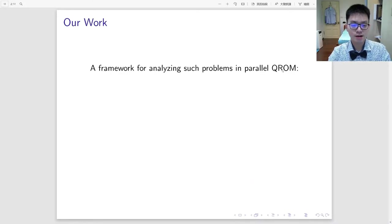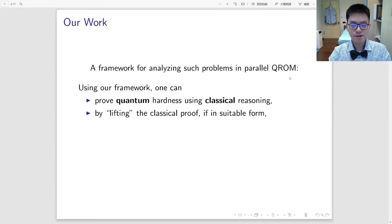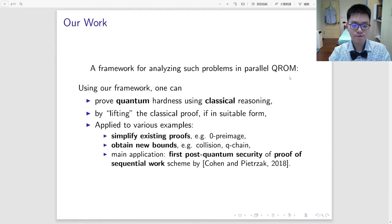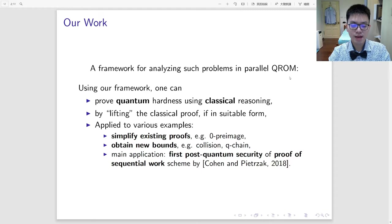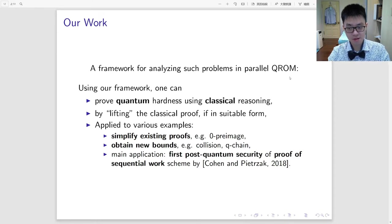We offer a useful framework for analyzing such problems in the parallel query quantum random oracle model. Using our framework, one can prove quantum hardness of these kinds of problems using classical reasoning, and this works by lifting classical proofs into quantum proofs if in suitable form. For demonstration, we apply our framework into solving various example problems, such as simplifying existing proofs like the hardness for the zero-preimage problem, and also obtaining new bounds such as for the collision-finding problem and for the q-chain-finding problem. The main application of our framework is that we give the first post-quantum security proof of the PSW scheme, or the Proof of Sequential Work scheme, constructed by Cohen and Pietrzak in 2018.